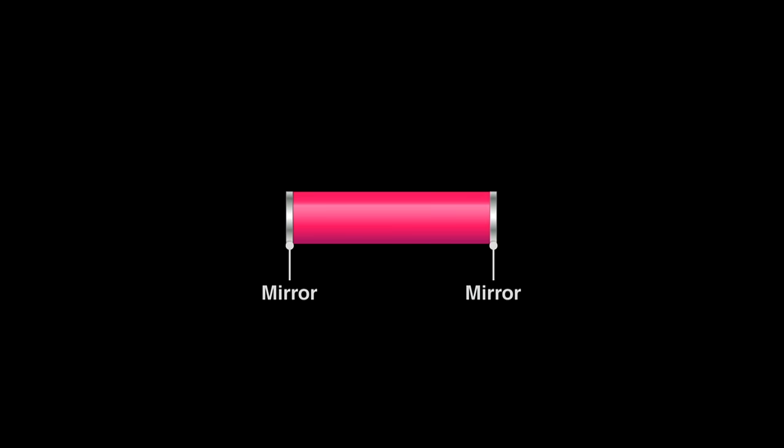Maiman silvered the ends to reflect the light within the ruby cylinder. He made the two ends of the rod astonishingly parallel to each other. From top to bottom, the distance between these two mirrors differs by no more than 200 nanometers. Inside this resonant cavity, two things happen.